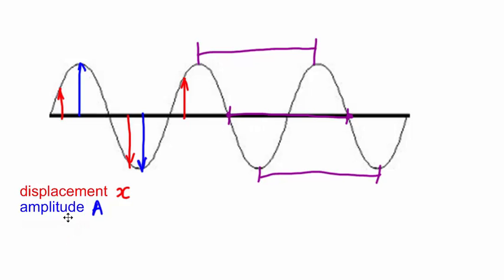We call this a wavelength, and we represent this with the Greek symbol lambda. The SI unit for measuring all three of these is the meter.